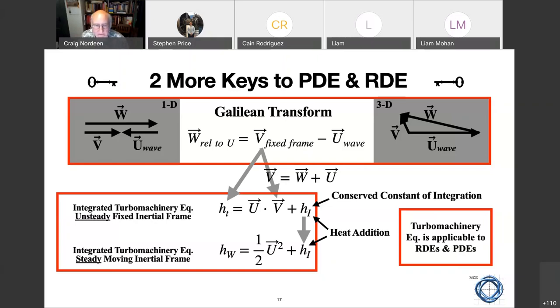If U is constant and my stagnation enthalpy is conserved in the moving frame, and this is constant, everything is constant and everything adds up. And being this is the conserved term, this is where my heat addition shows up in the thermodynamics. So we're taking something from the turbo machinery and we're finding that it is very applicable to either the RDE or the PDE. And this is good news because it means that you can analyze this using the tools that you already have in the books.